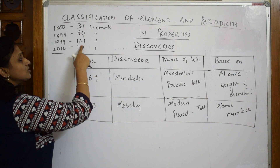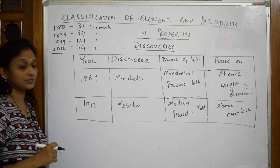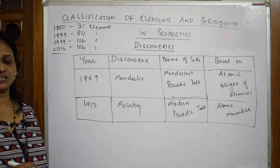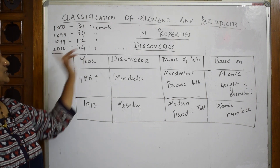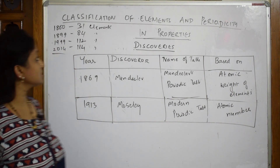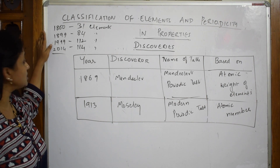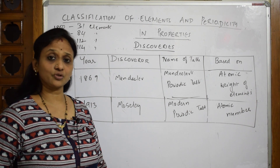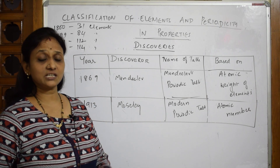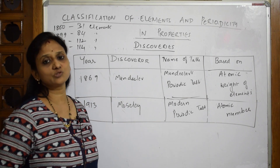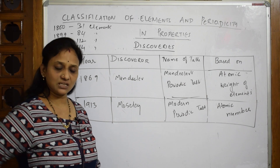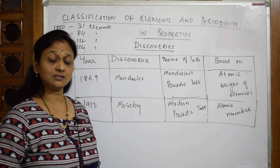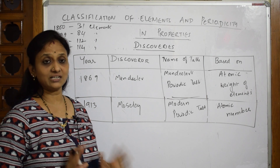I need to make a correction: the element count shown is not 141 — it should be 112 and 114, and it has now become 118. So to summarize: discoveries started in 1800, then 1899, 1999 to 2014. First it was Dobereiner, then de Chancurtois, then Newlands Octaves, then Mendeleev, and then Moseley. There were many scientists in between, which we'll cover as we go through the chapter. Now let's come back and learn each discovery clearly with examples.